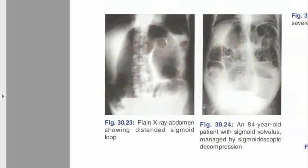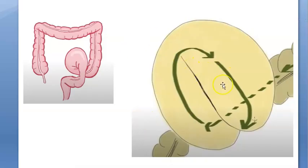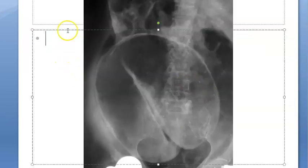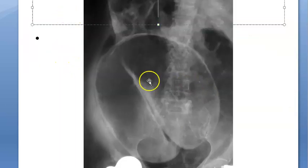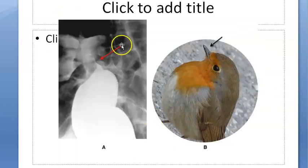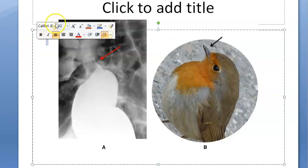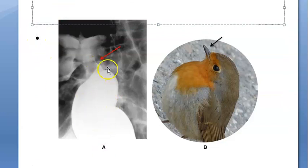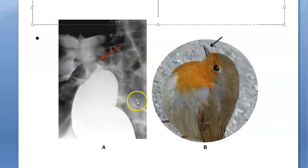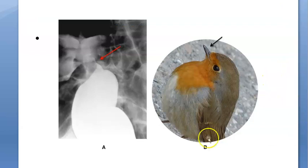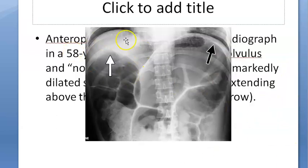It also looks like a coffee bean sign - you can see the coffee bean shape on X-ray. When you give an enema, the contrast cannot go beyond a certain point because of the volvulus, giving a bird beak sign. This is characteristic of sigmoid volvulus on contrast enema.